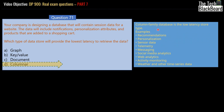Examples for columnar data include recommendations, personalization, sensor data, telemetry, messaging, social media analytics, web analytics, activity monitoring, weather, and other time series data. So if in the question you see any of these examples, then you know the answer will be columnar data. Just keep these keywords in mind when answering these kinds of questions.